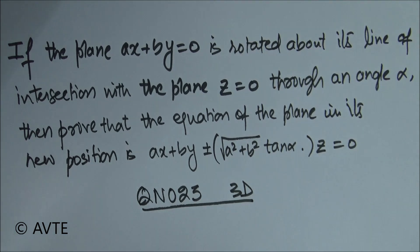See the question carefully. If the plane AX plus BY equals 0 is rotated about its line of intersection with another plane Z equals 0 through an angle alpha, then prove that the equation of the plane in its new position is AX plus BY plus minus under root of A square plus B square into tan alpha into Z equals to 0.